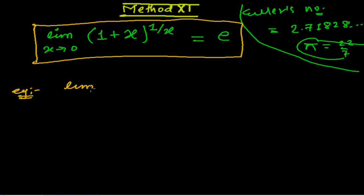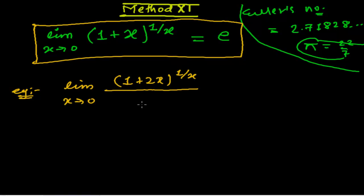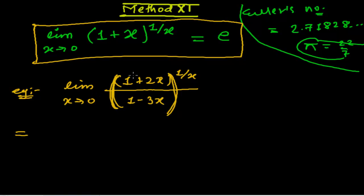Here is just an example. The problem is: limit when x tends to 0, of (1 + 2x) whole divided by (1 − 3x), whole to the power 1/x. We have to find out the limit of this expression.